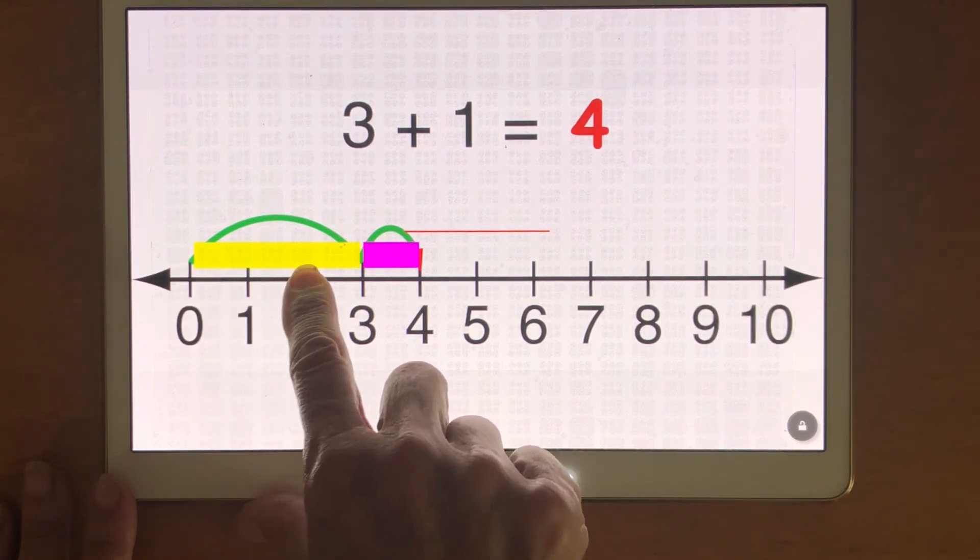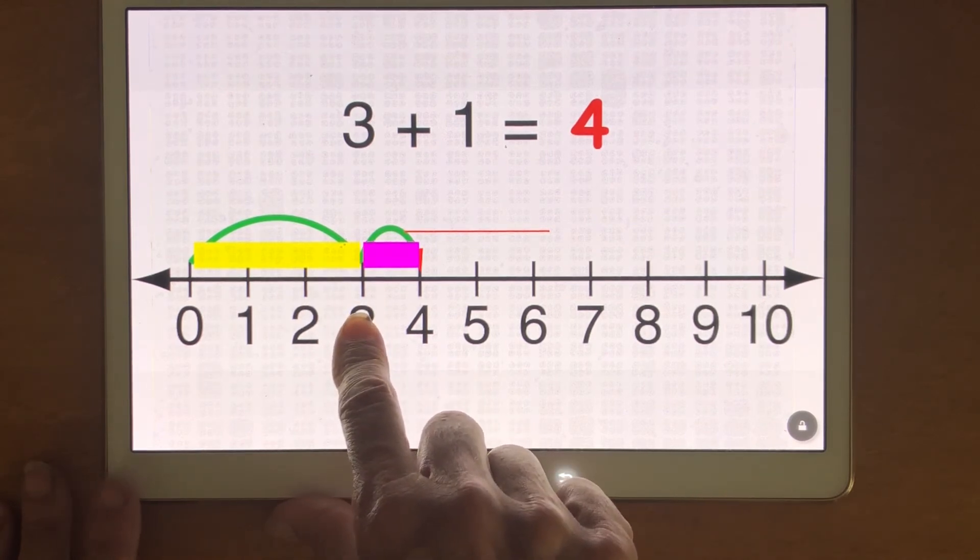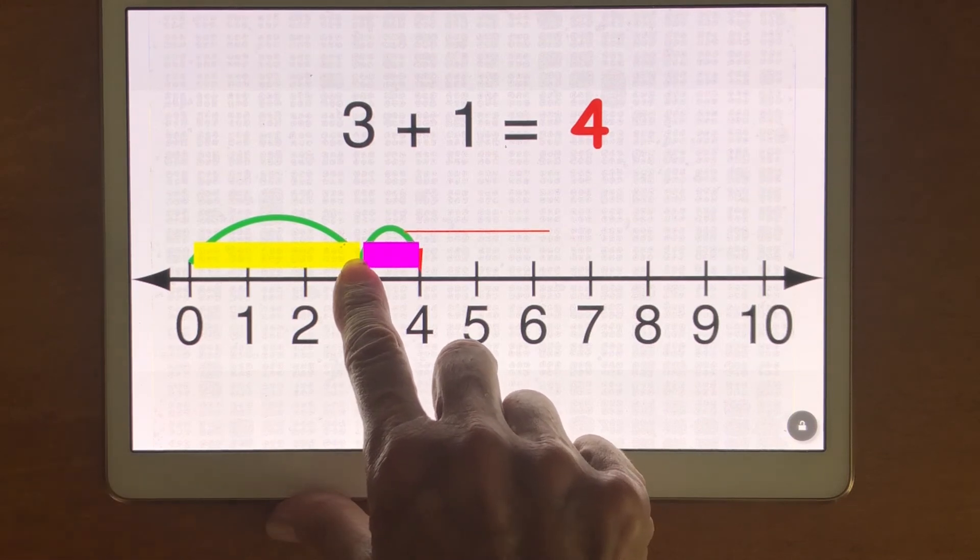One, two, three. I can confirm that I'm on three by dragging my finger down. Yep, that's three. Now I'm gonna add one more.